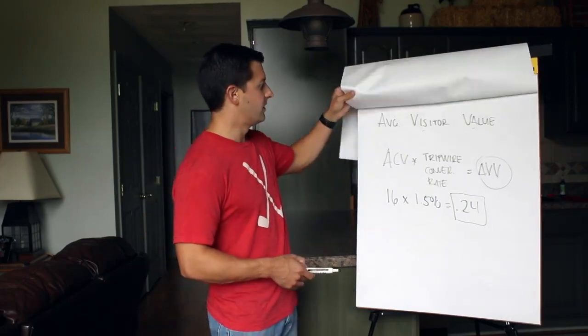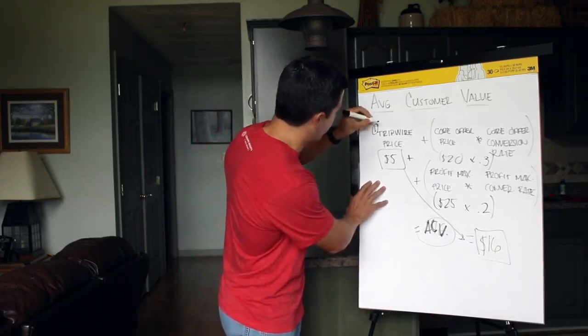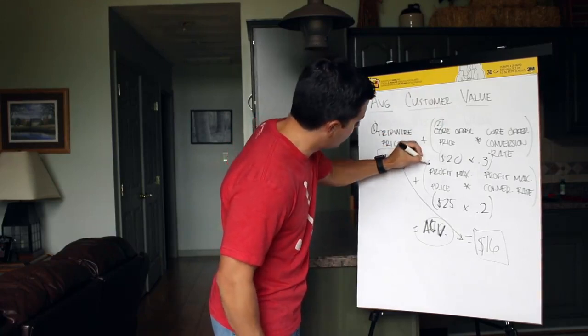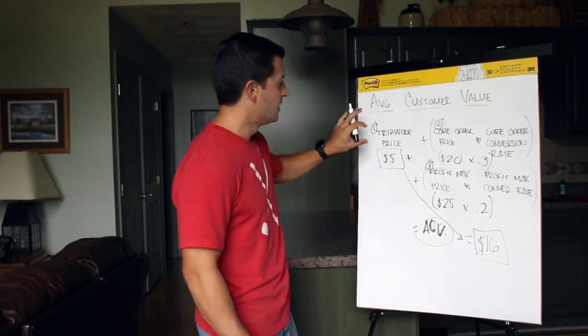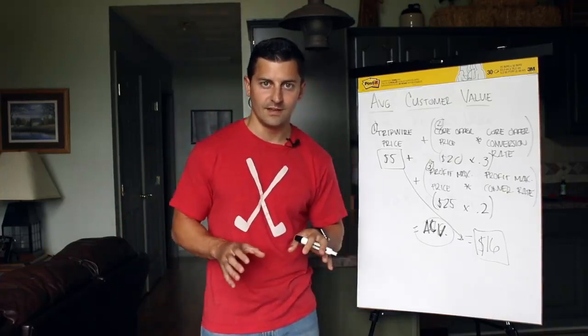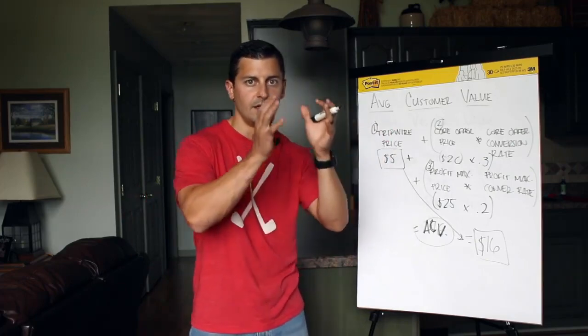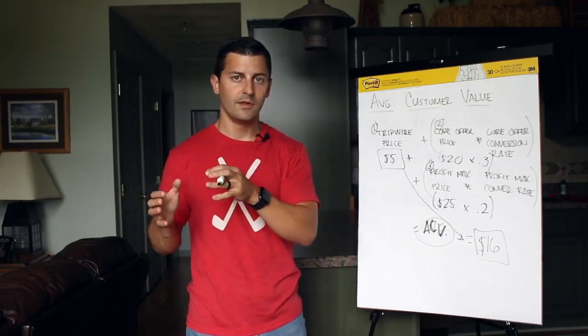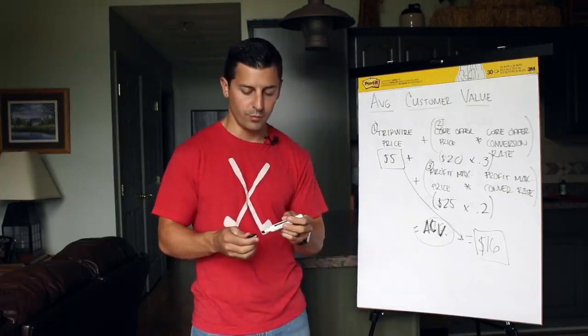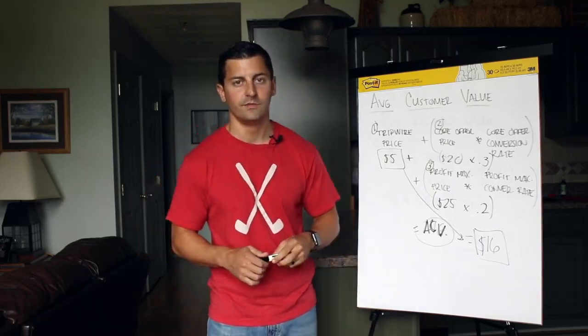So let's jump back over here really quick and just review this. There's three offers here: one, the tripwire; two, the core offer price; and then three, the profit maximizer. You can dummy this down and do as many of those offers as you want. This just helps you understand in a very complex situation if we're going to funnel from a low ticket to a higher ticket item, how to figure out that average customer value. It's very important to know that so then you know how much you should be spending in order to acquire that new customer.